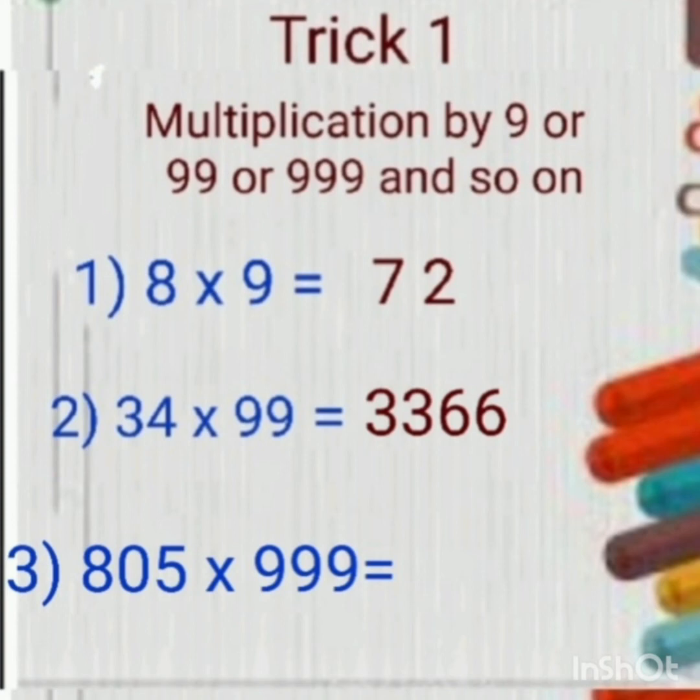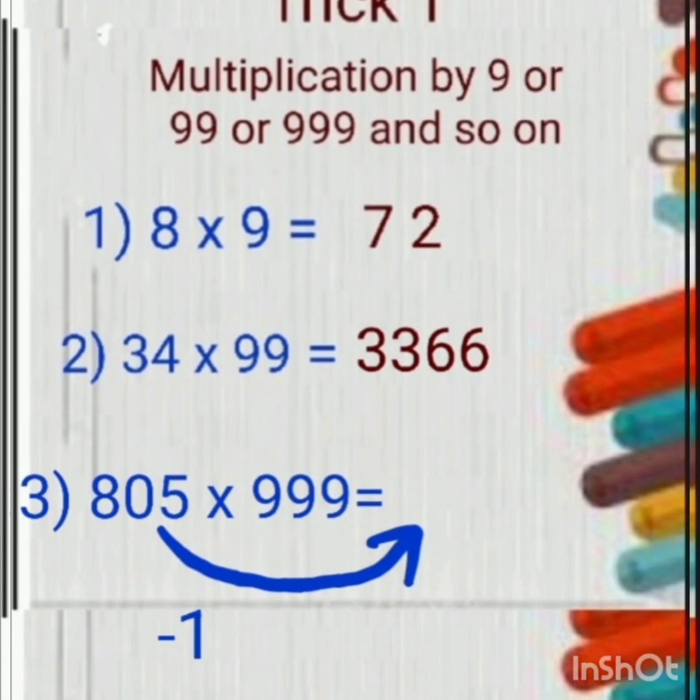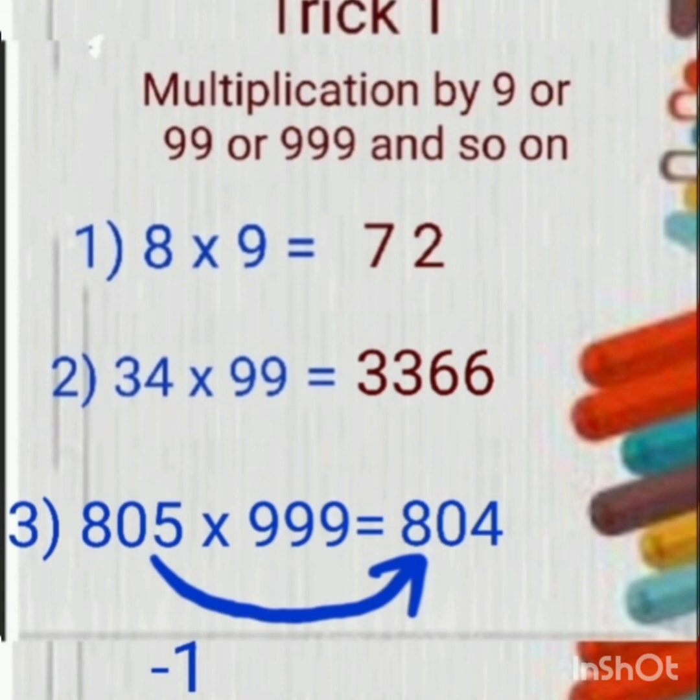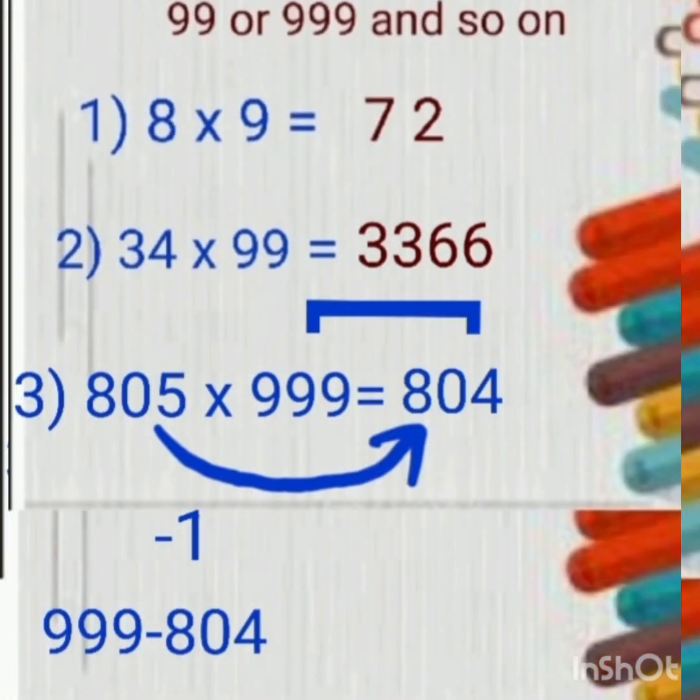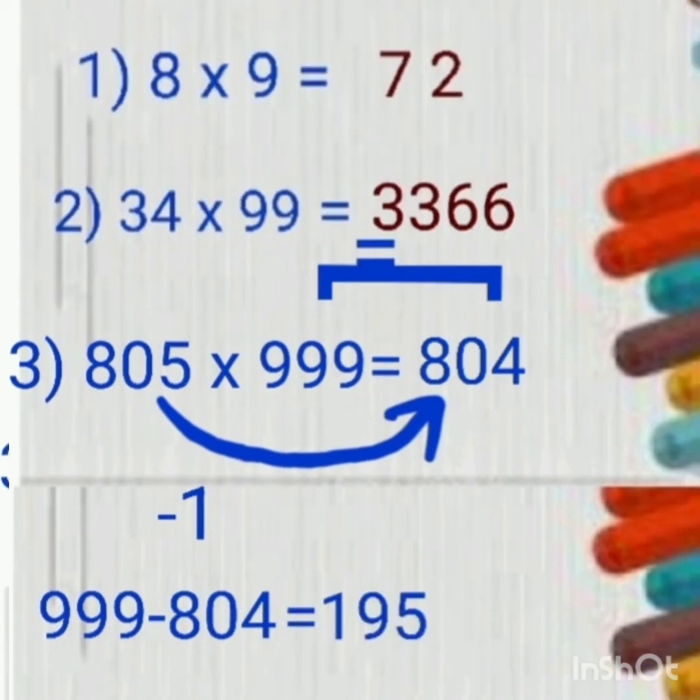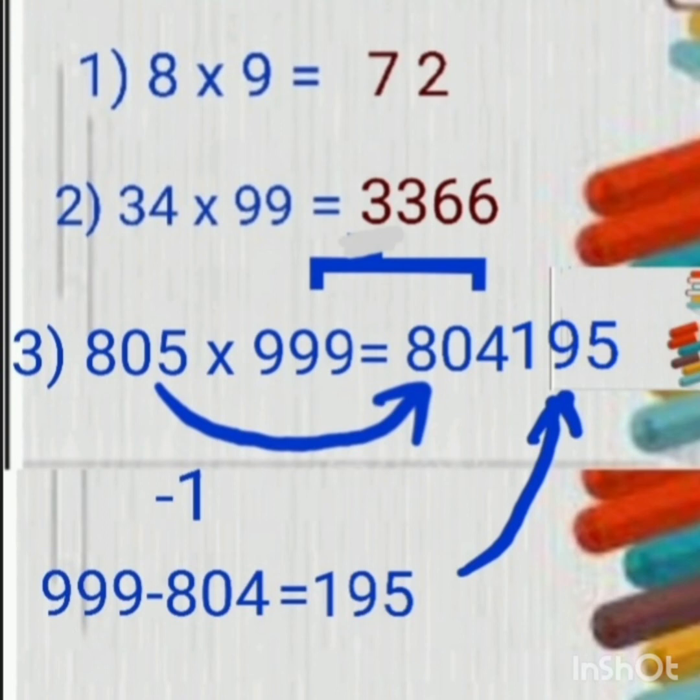Subtract 1 from 805. You will get 804. Then subtract 804 from 999, and you will get 195. Just write 195 beside 804, and the 6 digit answer is ready.